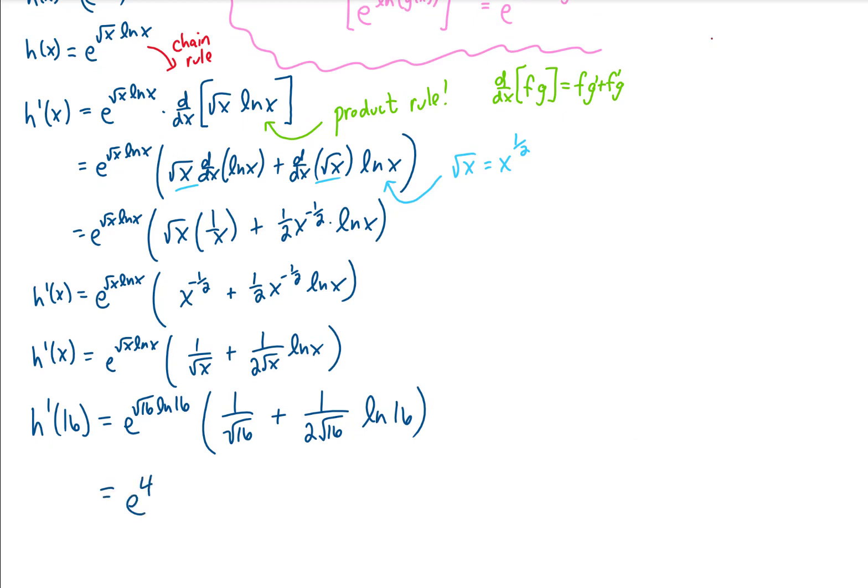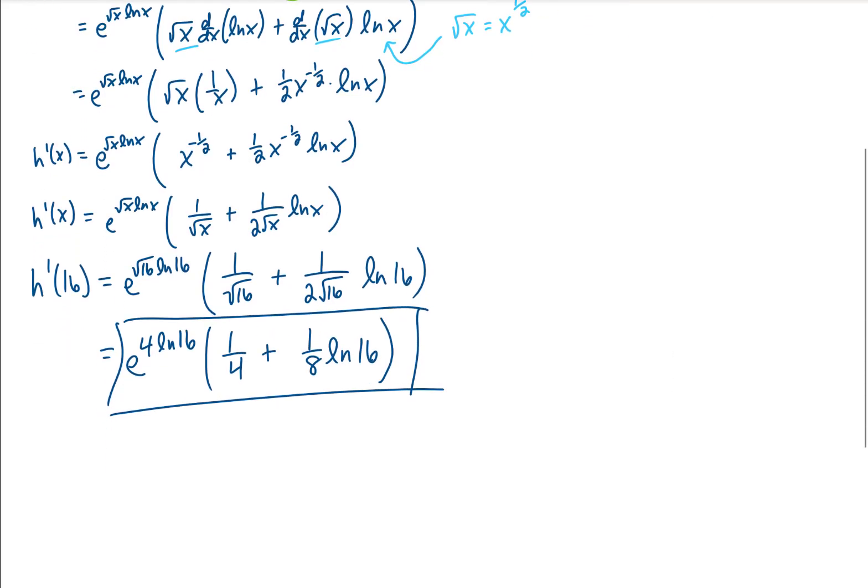And let's simplify this a step. We know that the square root of 16 is 4. That turns this 1 over 2 square root of 16 into a 1 eighth. And I think that that answer is a pretty good one. If you wanted to for fun, we could factor a 1 eighth out of these parentheses. That would get rid of the fractions. That would leave us with the 2 from this term and just the natural log of 16 from this term. You can verify that that's true by imagining what would happen if you multiplied this 1 eighth back through the parentheses.